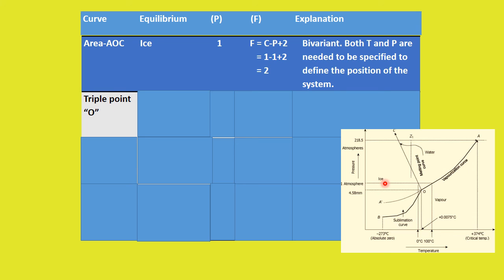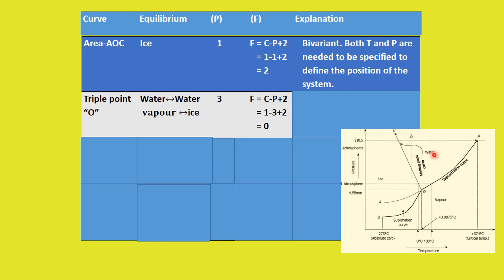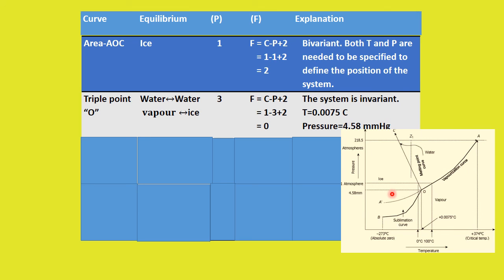Now let us focus on the triple point, where all three phases coexist. The number of phases is 3 and F = 0 — the system is invariant. This means neither temperature nor pressure needs to be varied; we simply need to know the fixed conditions: the temperature is 0.0075 degrees Celsius and the pressure is 4.58 millimeters of mercury. Triple point is formed only at this one fixed point.